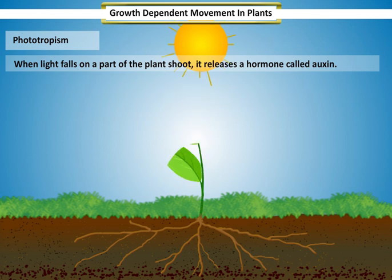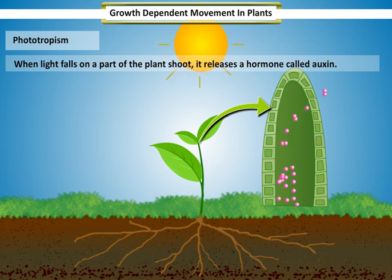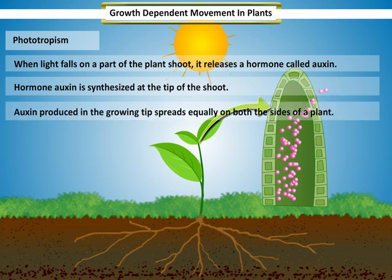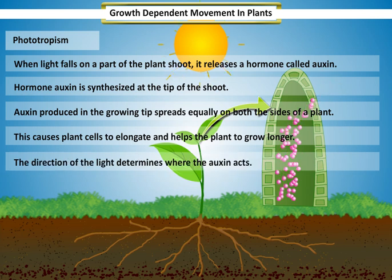When light falls on a part of the plant shoot, it releases a hormone called auxin. Hormone auxin is synthesized at the tip of the shoot. Auxin produced in the growing tip spreads equally on both sides of a plant, causing plant cells to elongate and helping the plant to grow longer.